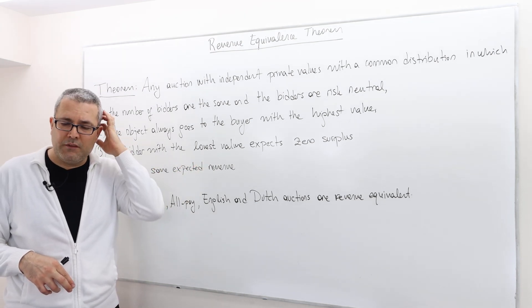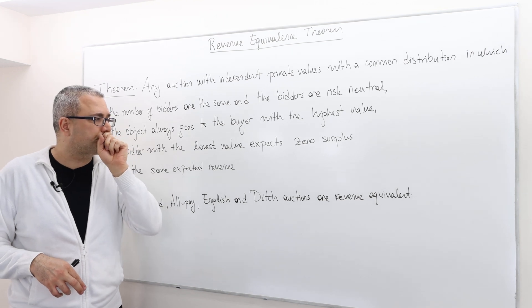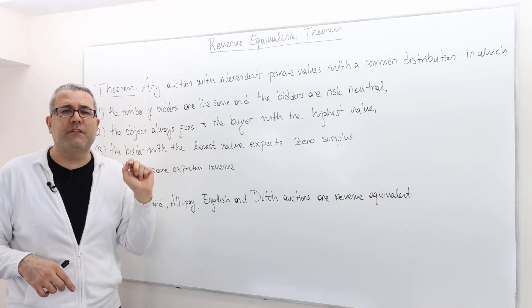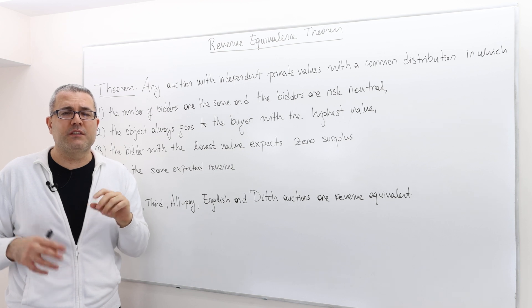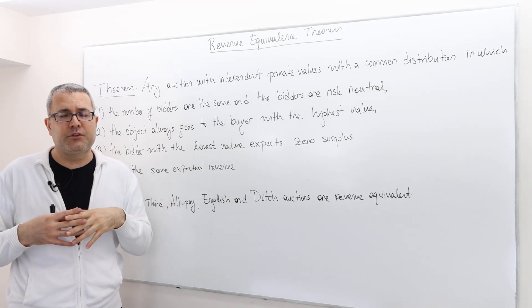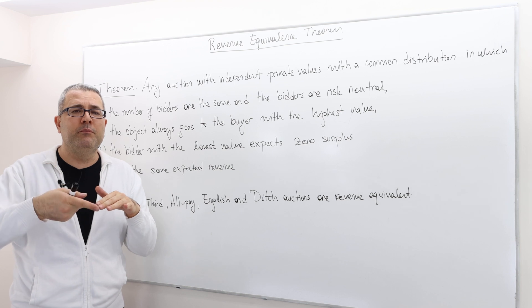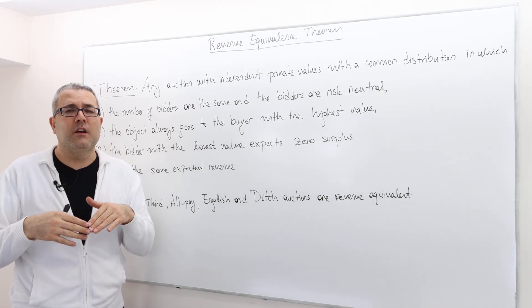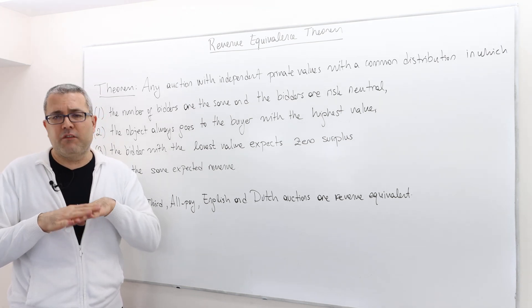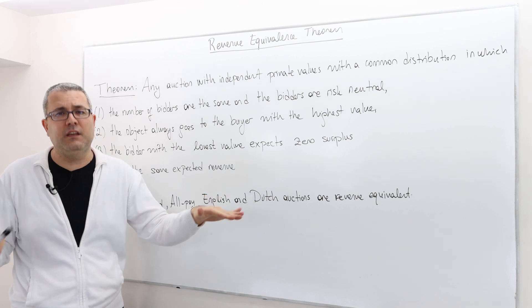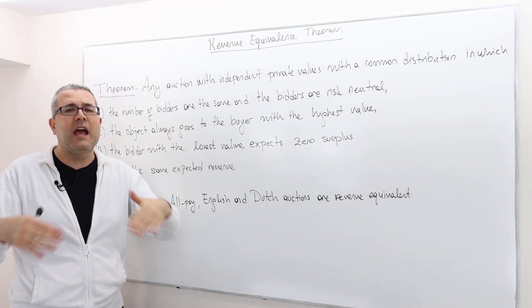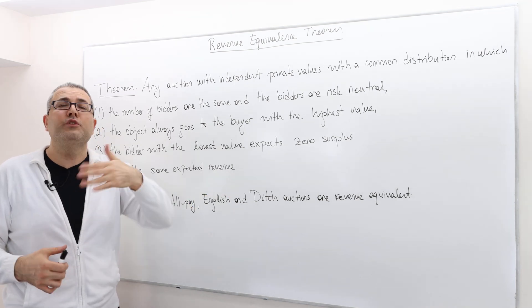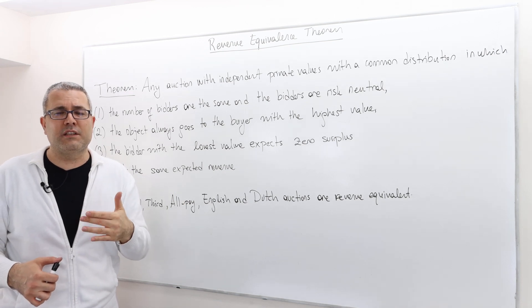For example, if you have a reservation price, meaning everybody should pay some fixed fee to enter the auction. So before you make a bid, everybody has to pay a flat fee and then enter the auction and then make a bid on top of the reservation price.